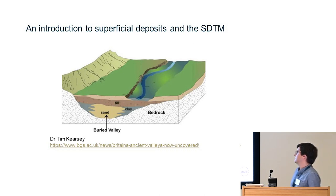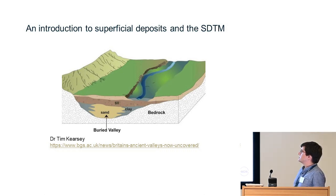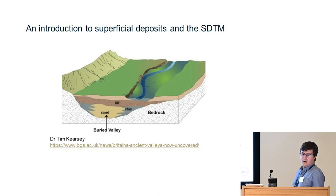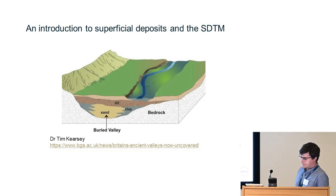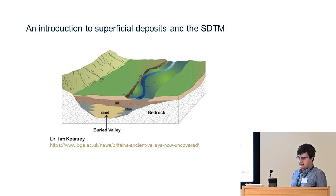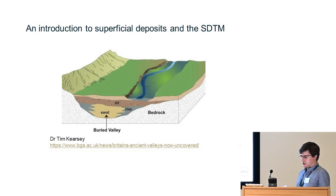Here you can see Superficial Deposits in a buried valley, which we will come back to later. Basically a glacier has formed a valley and it's then filled up with sediment over time. Buried valleys are actually quite important for Superficial Deposit modelling. Most of these Superficial Deposits are unconsolidated sediments such as gravel, sand, silts and clays, and onshore they usually form a relatively thin, often discontinuous layer in patches or larger spreads.